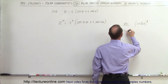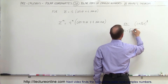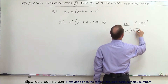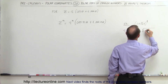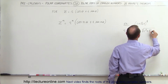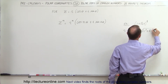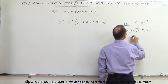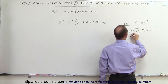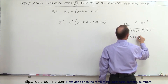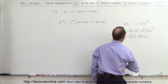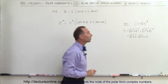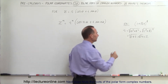So let's go ahead and put that example into its polar form. We can say that r is equal to the square root of a squared plus b squared. In this case, that would be equal to the square root of 1 squared plus the square root of 3 squared, which equals the square root of 1 plus 3, or the square root of 4, which is equal to 2. So r is equal to 2.